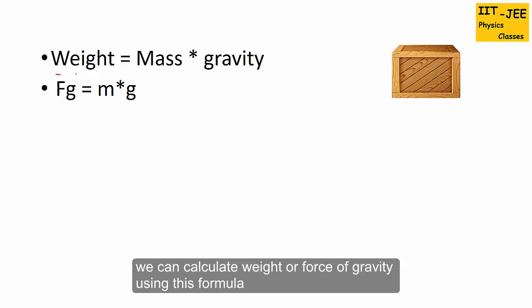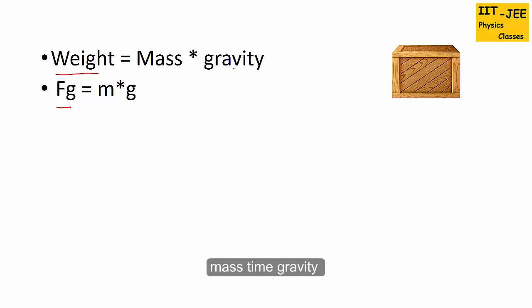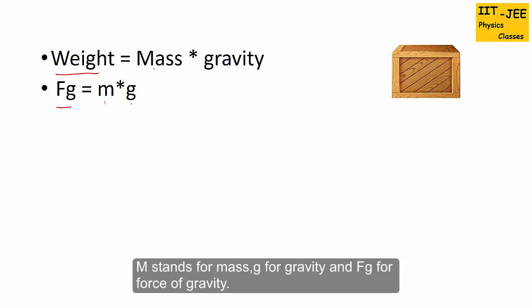We can calculate weight or force of gravity using this formula: mass times gravity, or m times g. m is for mass, g is for gravity, and Fg is for force of gravity.